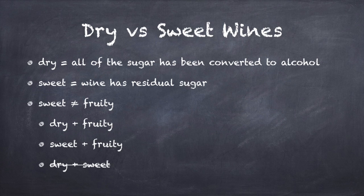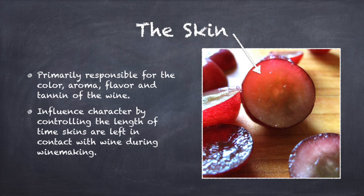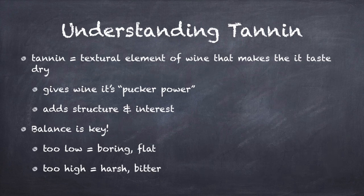Next, let's move on to the grape skins. The skins also play a critical role in winemaking, particularly in the production of red wine. The skin is largely responsible for imparting the aroma and flavor of the wine, as well as the color and tannin. All of these elements can be further influenced by the winemaker by varying the length of time that the skin is left in contact with the wine during the production process. For example, a wine that was exposed to the grape skins for a long period of time will have significantly higher tannin than one where the grape skins were removed early in the process.